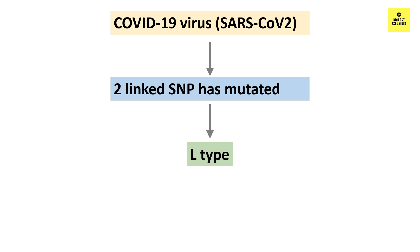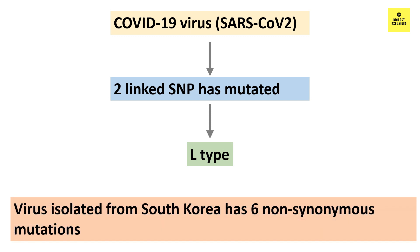The authors think that the L-type was more confined to Wuhan, while the S-type, which is less aggressive, is found worldwide. The authors also found that viruses isolated from patients in South Korea acquired six non-synonymous mutations different from the most recent common ancestor. It would be interesting to see how these novel mutations affect the transmission and pathogenesis of SARS-CoV-2.